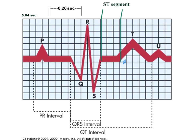T waves represent repolarization of the ventricles. Flat or inverted T waves can happen in response to many things; an inverted T wave means it's upside down. The T wave should be in the same direction as the P wave — if both are inverted, you likely have the leads on backwards. Tall peaked T waves can occur when serum potassium is elevated. The U wave — sometimes seen after the T wave — has uncertain significance, though it is prominent when potassium levels are low.